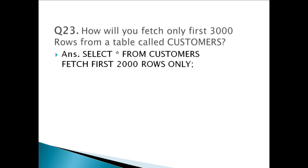Question twenty-three: How will you fetch only the first 3000 rows from a table called CUSTOMERS? You have to write a query like: SELECT * FROM CUSTOMERS FETCH FIRST 3000 ROWS ONLY. This kind of query is often used with cursors.